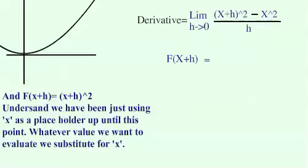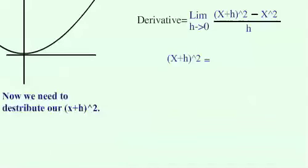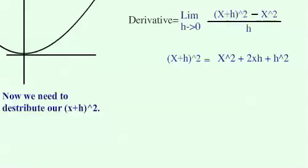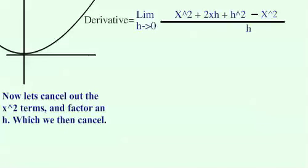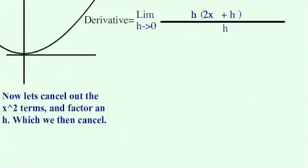So f of x equals x squared, and f of x plus h equals x plus h, quantity squared. Understand that we have been using x as a placeholder — whatever value you want to evaluate, substitute for x. Distributing x plus h quantity squared gives us x squared plus 2xh plus h squared. When we substitute that into our equation, we can easily cancel out the x squared terms.